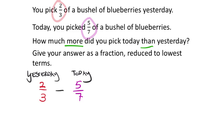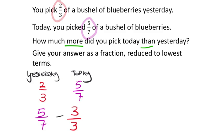It's not two-thirds minus five-sevenths. Since today you picked more than yesterday, you take today's value (five-sevenths) and subtract yesterday's value (two-thirds). If you set it up the wrong way, you'd get a negative answer. We should not be seeing negatives here. Order matters for subtraction.